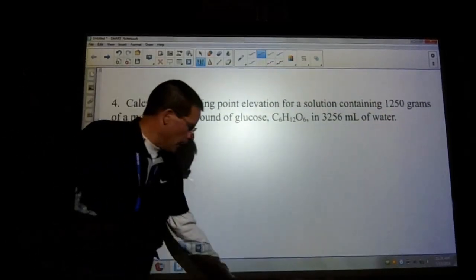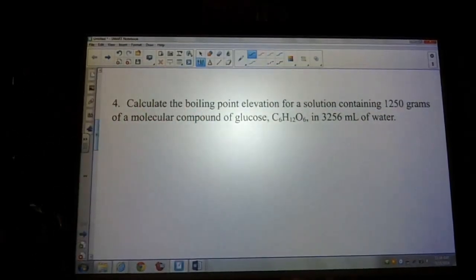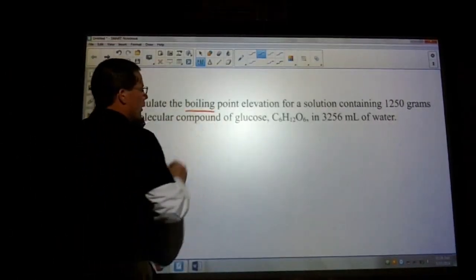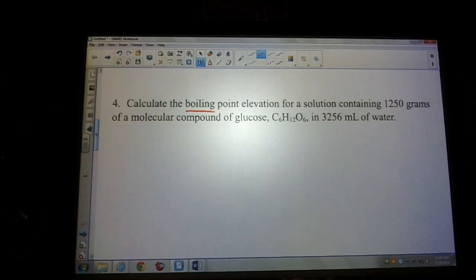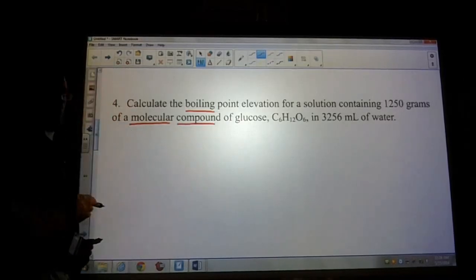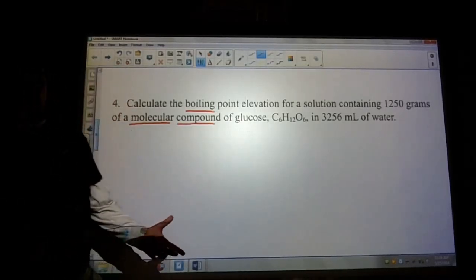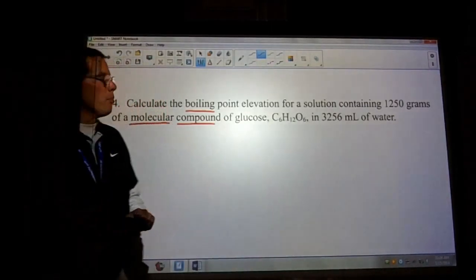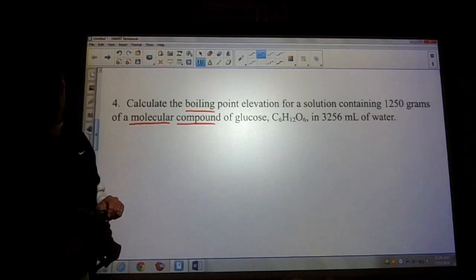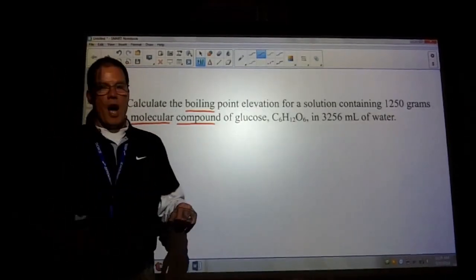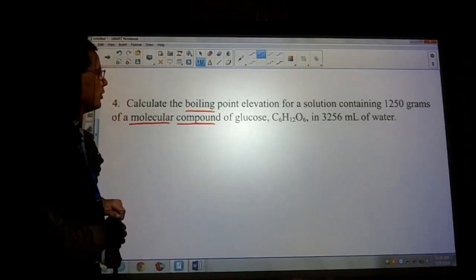Let's look at the next question, number four. Calculate the boiling point elevation for a solution containing 1,250 grams of a molecular compound glucose. I'm being nice here by telling you that this is a molecular compound, so that when you go and decide whether you're going to do your boiling point elevation or freezing point depression, do you need to worry about the van't Hoff factor or the multiplier? In this case, if it's molecular, the i value will always be 1.